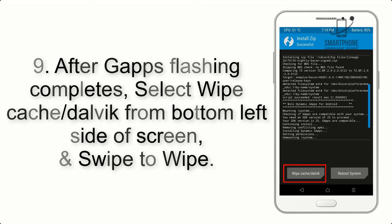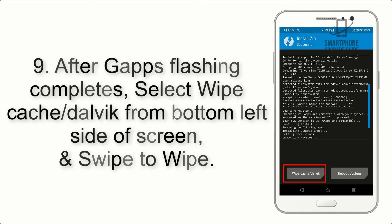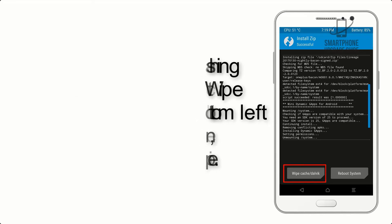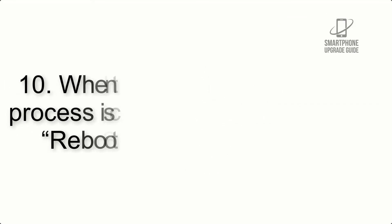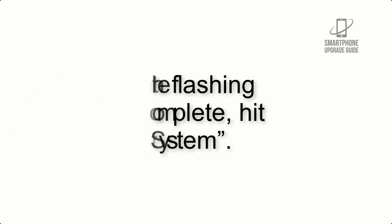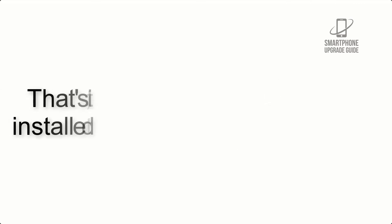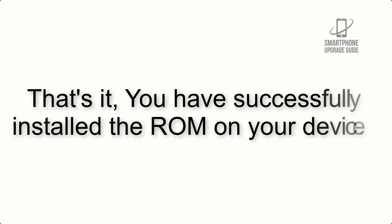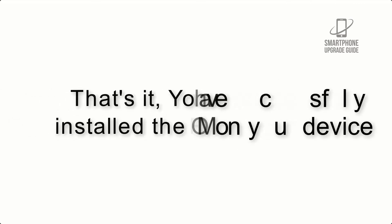Step 9: After GApps flashing completes, select Wipe Cache and Dalvik from the bottom left side of the screen and swipe to wipe. Step 10: When the flashing process is complete, hit Reboot System. That's it — you have successfully installed the ROM on your device.